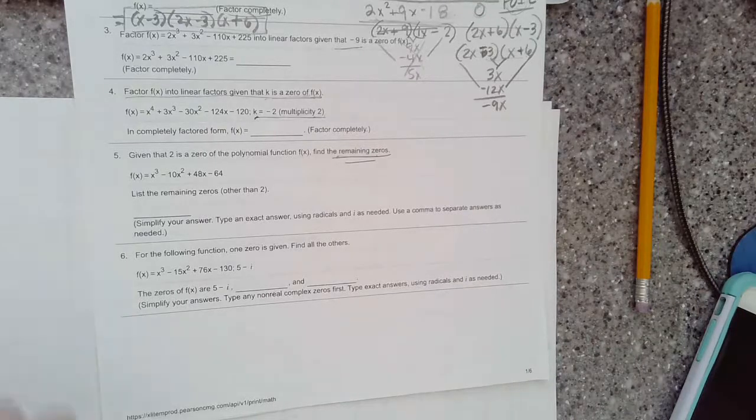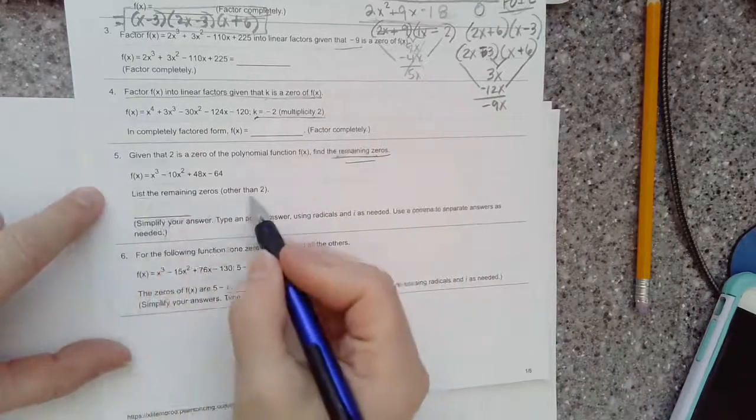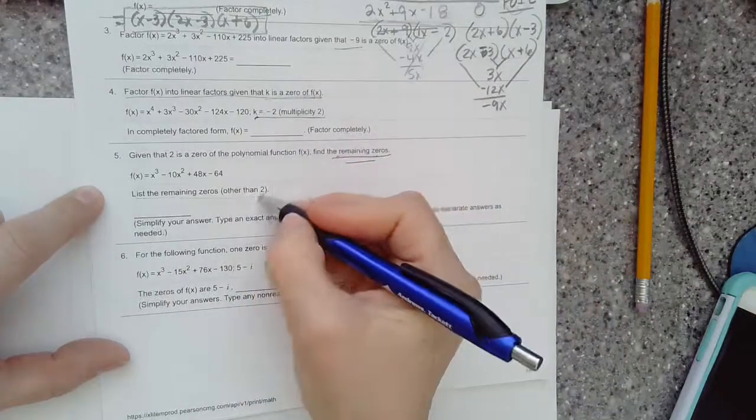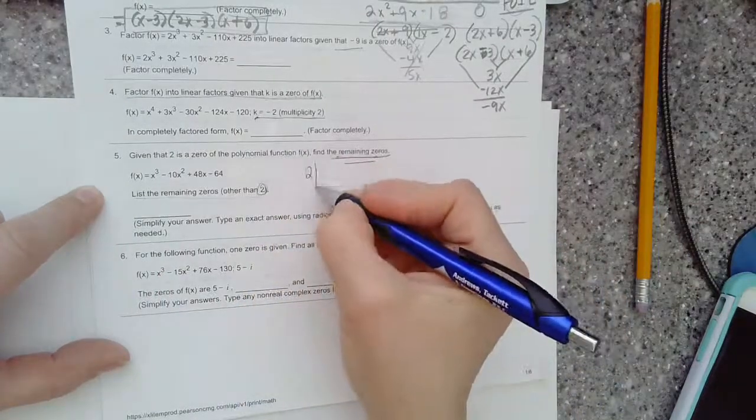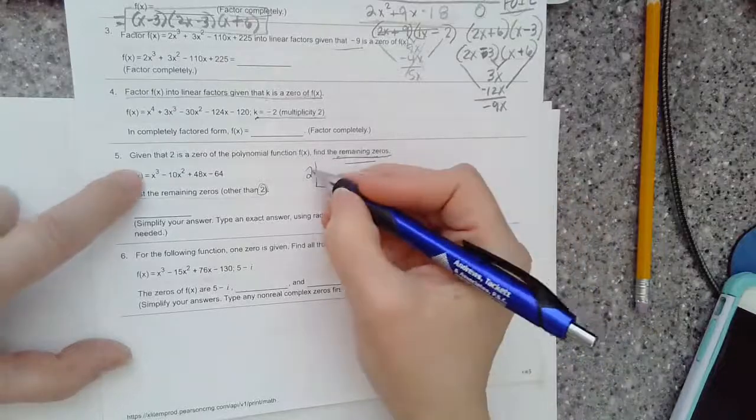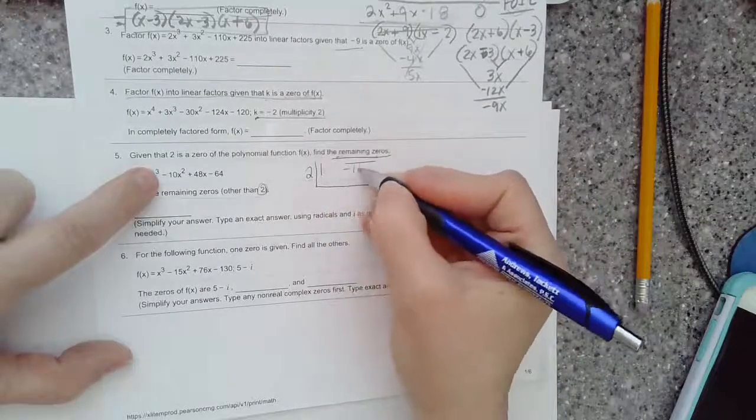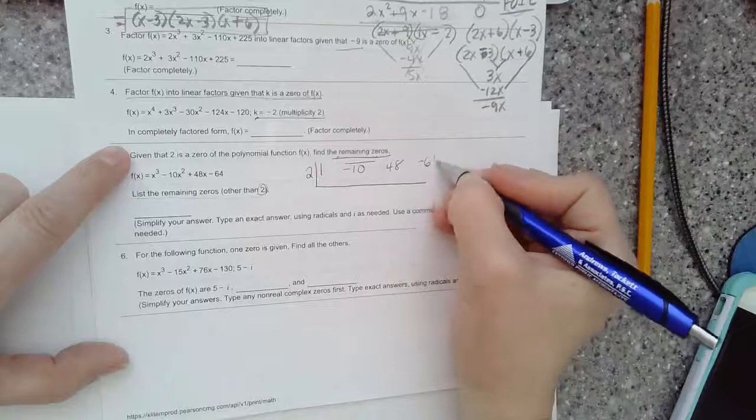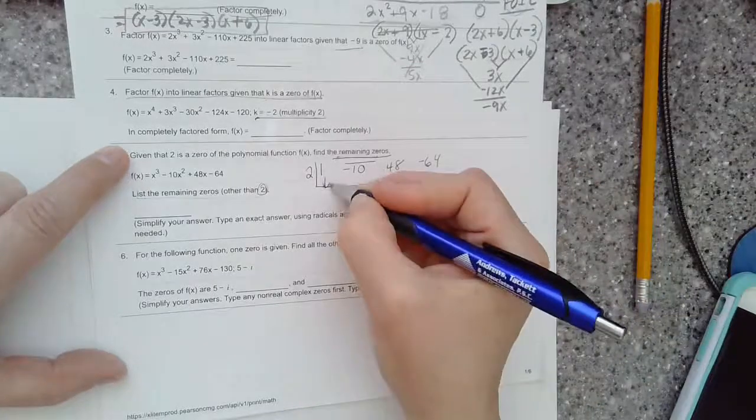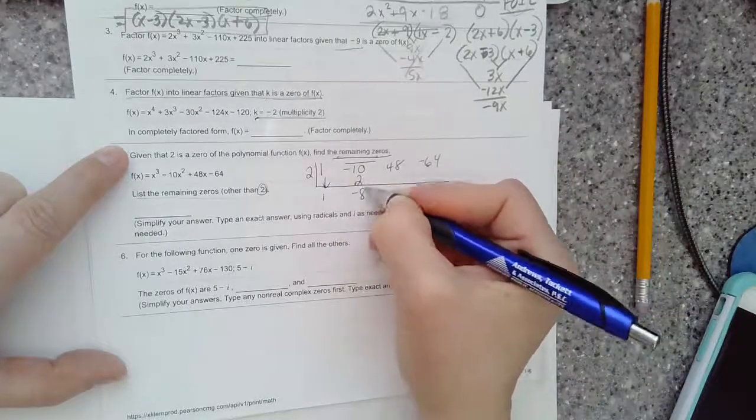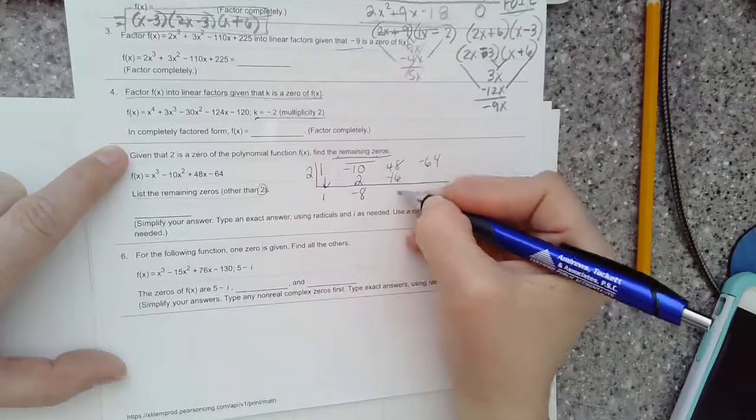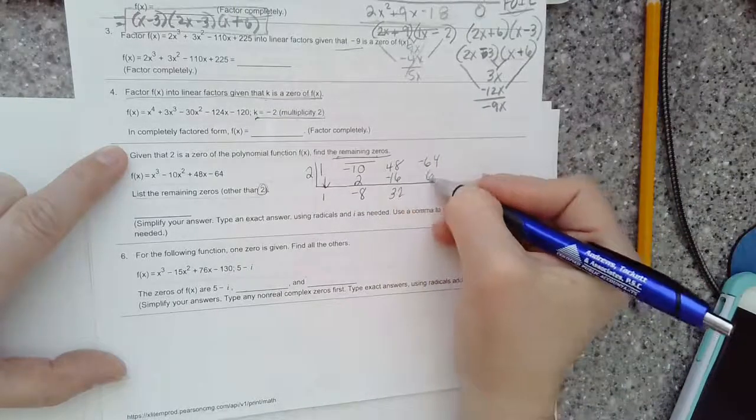So it tells me that two works. I put my coefficients of all my terms, making sure not to skip any values. Then I multiply and add my way across, and yes, that does give me a zero remainder.